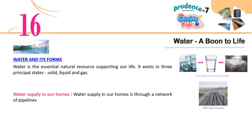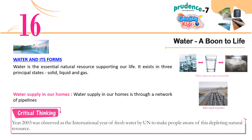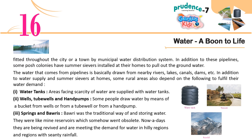Water supply in our homes is through a network of pipelines fitted throughout the city or town by the municipal water distribution system. In addition to these pipelines, some posh colonies have submersibles installed at their homes to pull out the ground water. The water that comes from pipelines is basically drawn from nearby rivers, lakes, canals, dams, etc. In addition to water supply and submersibles at homes, some rural areas also depend on the following to fulfil their water demand.